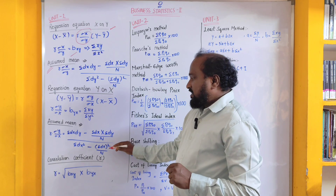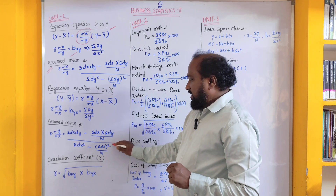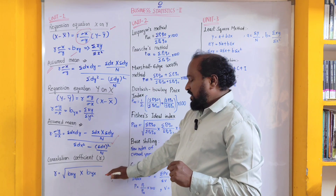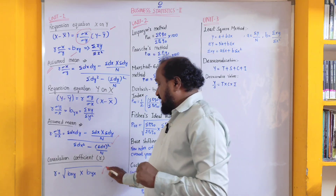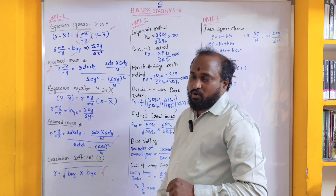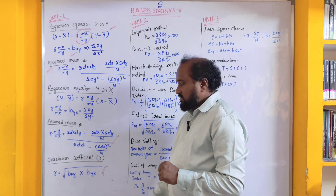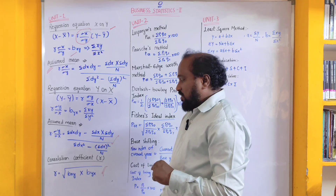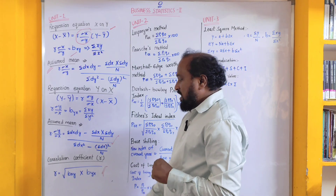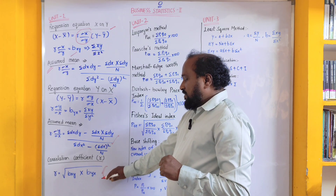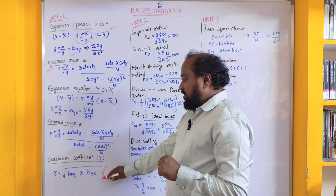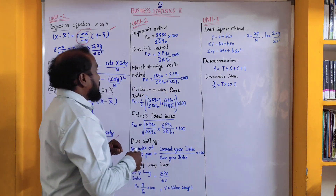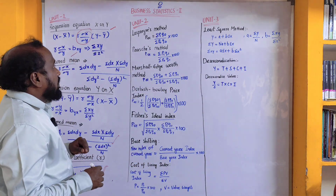Regression equation Y on X follows the same approach. Next is the correlation formula — this is very important. One question will definitely appear for four marks. The formula is: correlation coefficient is equal to root of b-XY into b-YX.